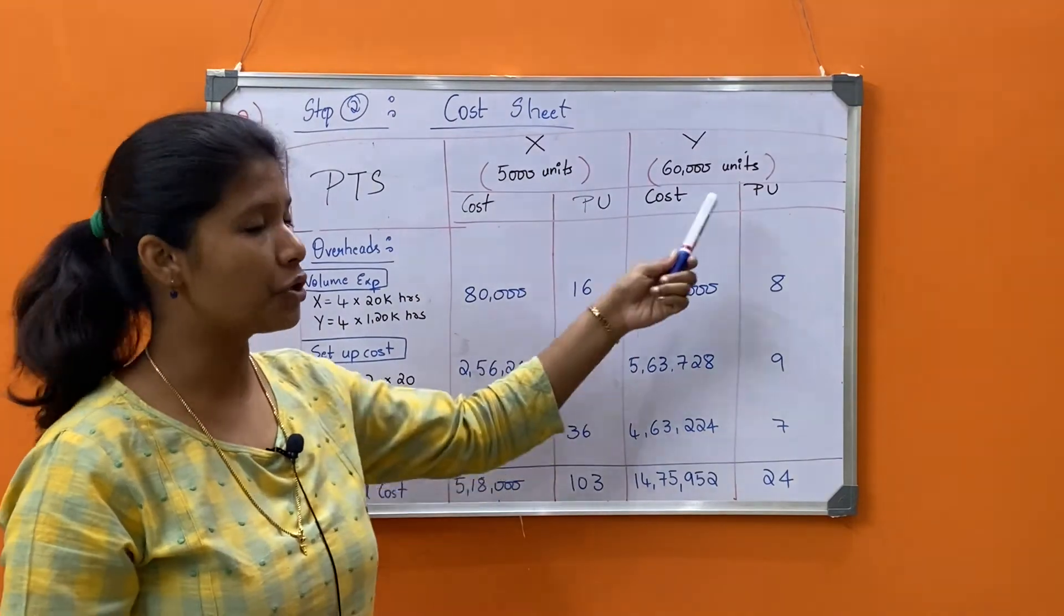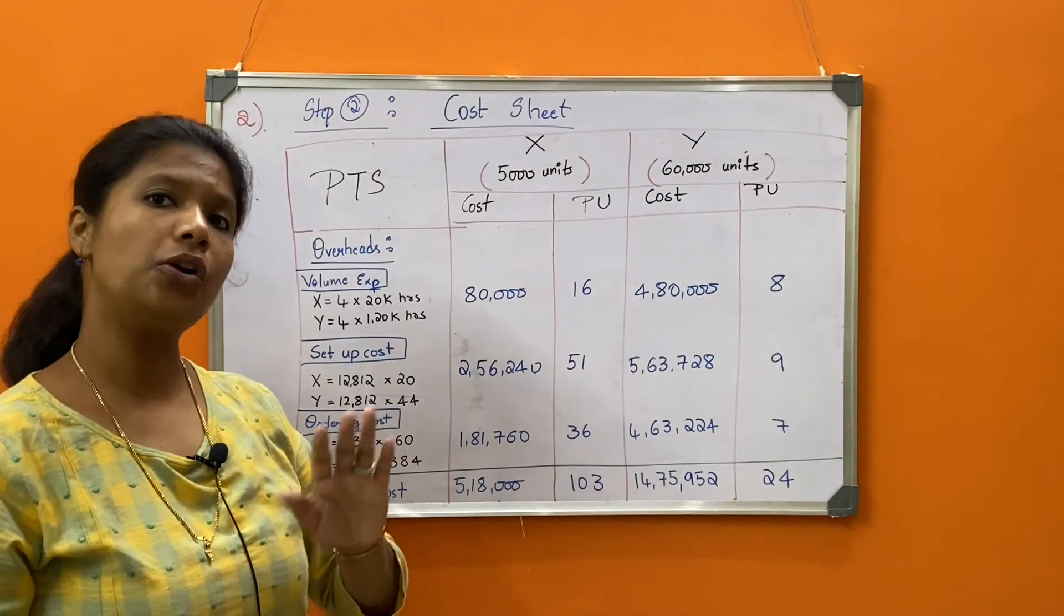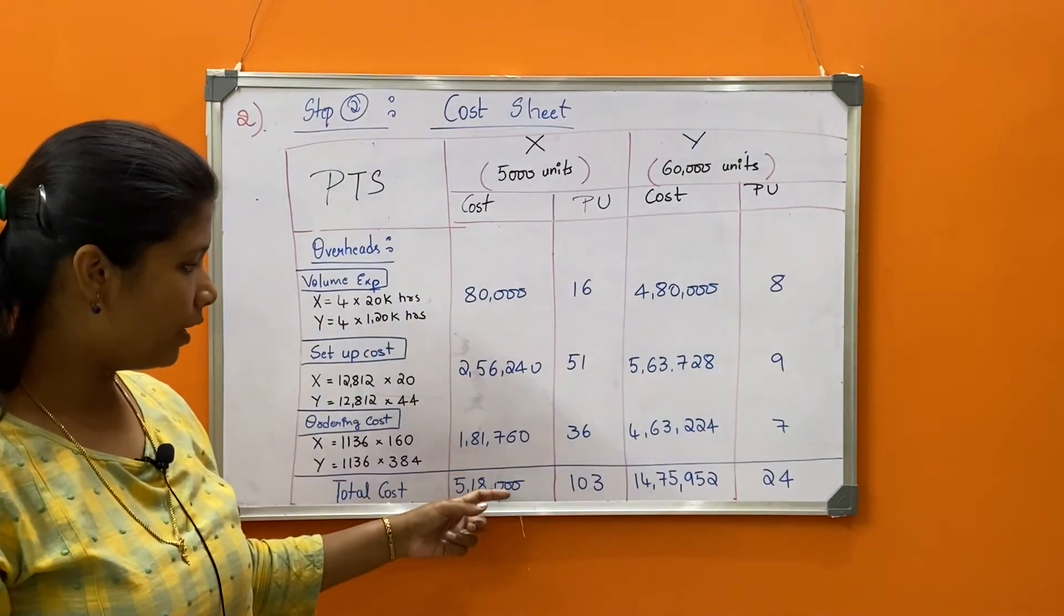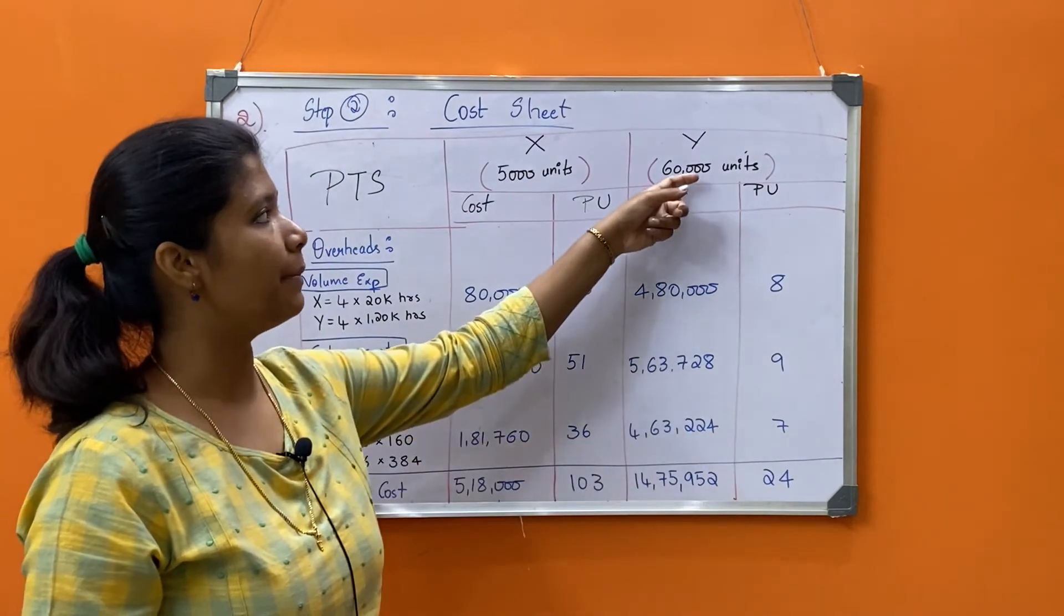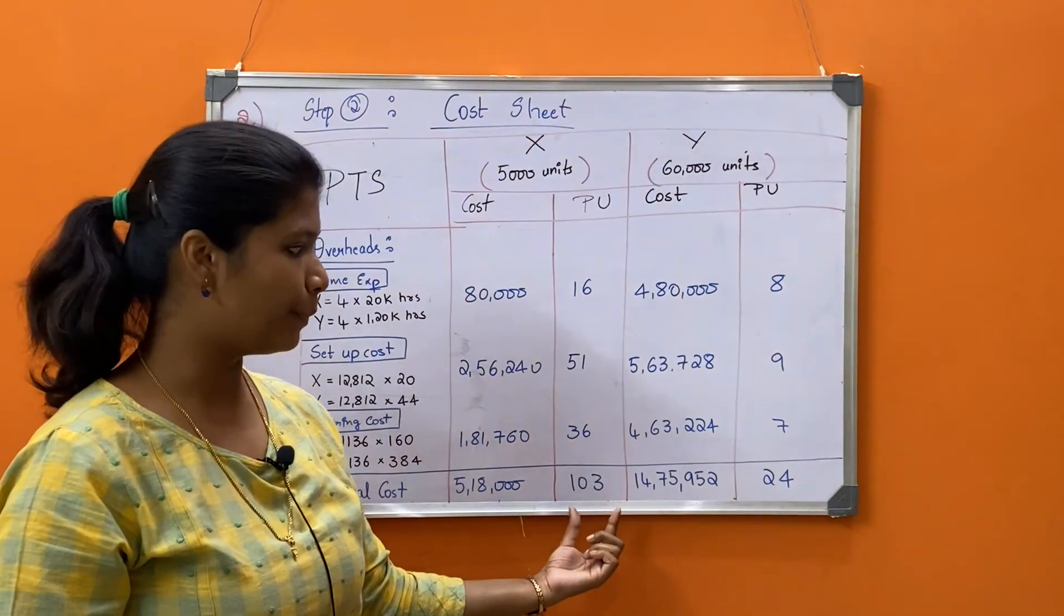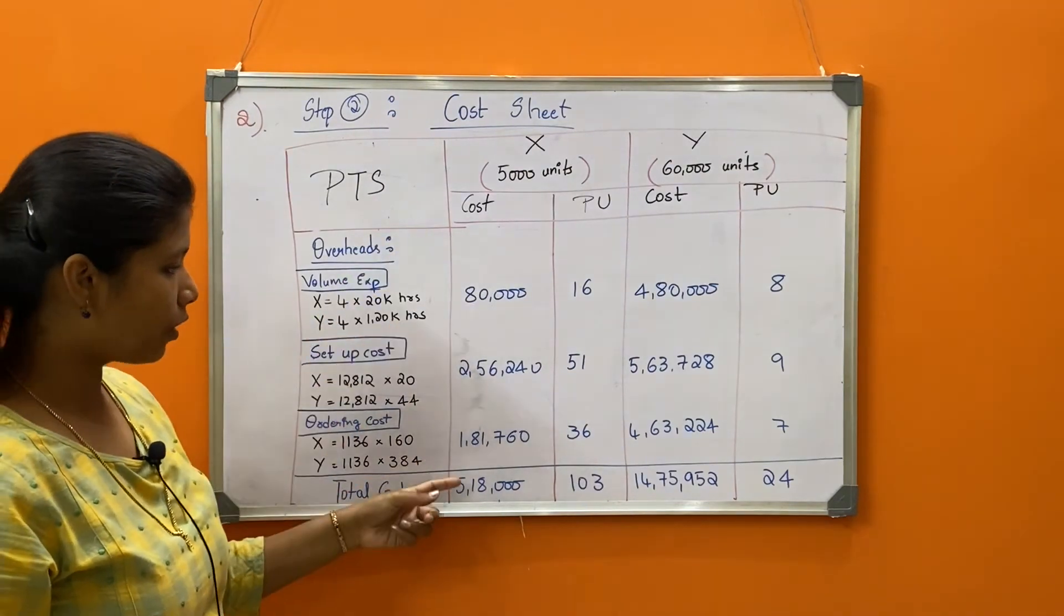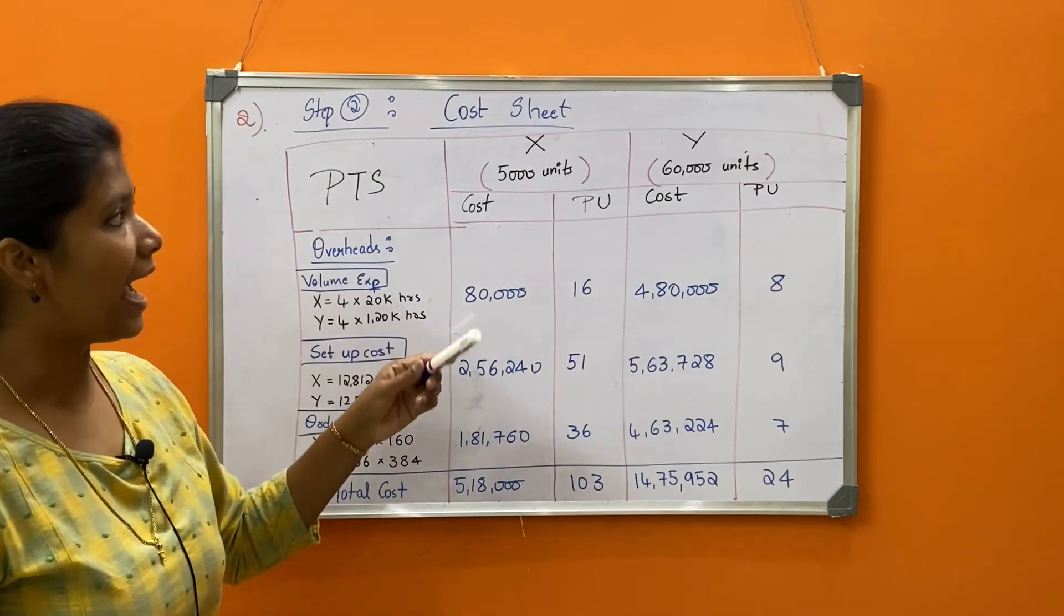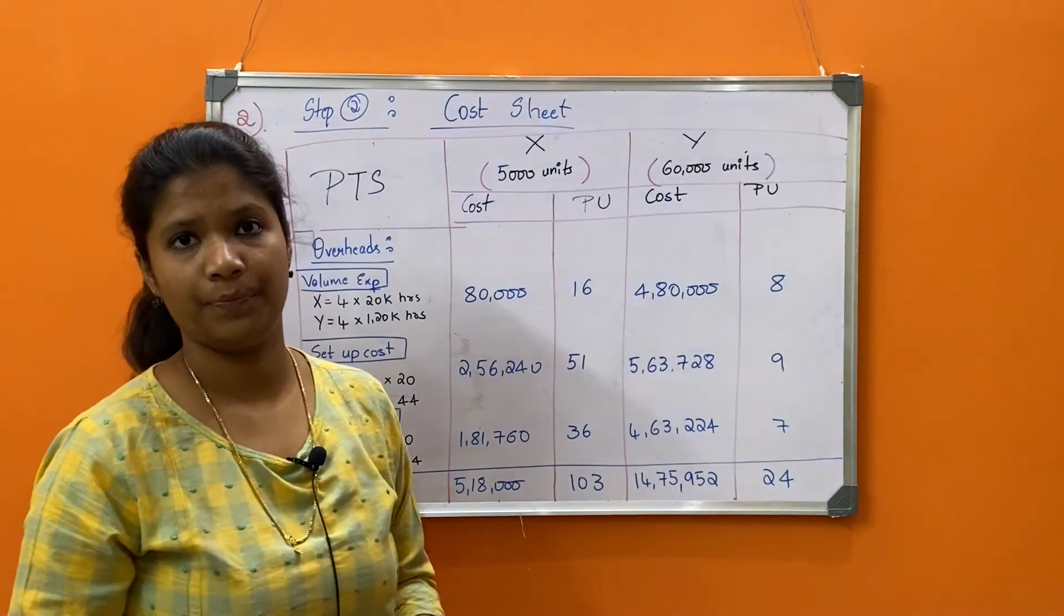The last overhead is ordering cost. That is 1136 multiplied by 160 for product X and 384 for product Y. The answers are 1,81,760, divided by production gives 36 rupees per unit. And 4,36,224 divided by 60,000 units gives 7 rupees. This per unit column is optional. You can directly write the cost for both products, total it up, then divide by 5,000 and 60,000. Either way, you get per unit for product A of 103 rupees and for product Y 24 rupees. When you total all costs, for A it is 5,18,000 and for Y it was 14,07,952.